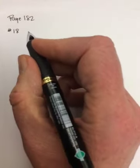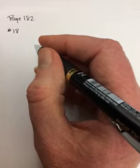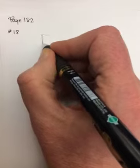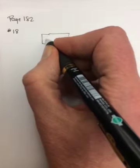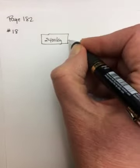Okay, so your homework on page 182, first number 18. A 1700 kilogram car is towing a larger vehicle with a mass of 2400 kilograms. So here's my larger vehicle, 2400 kgs.